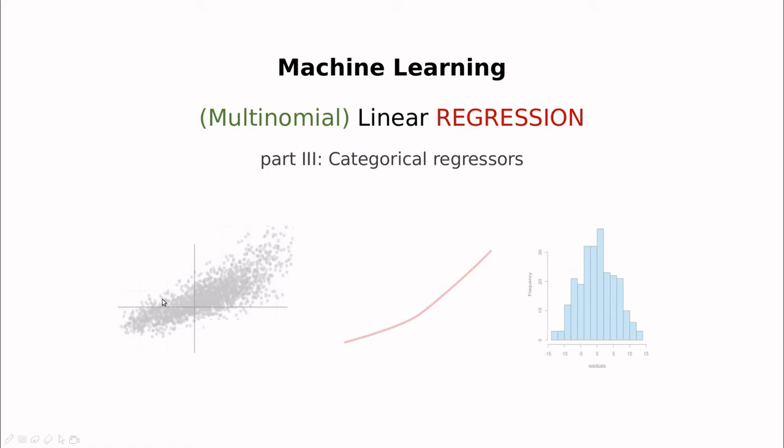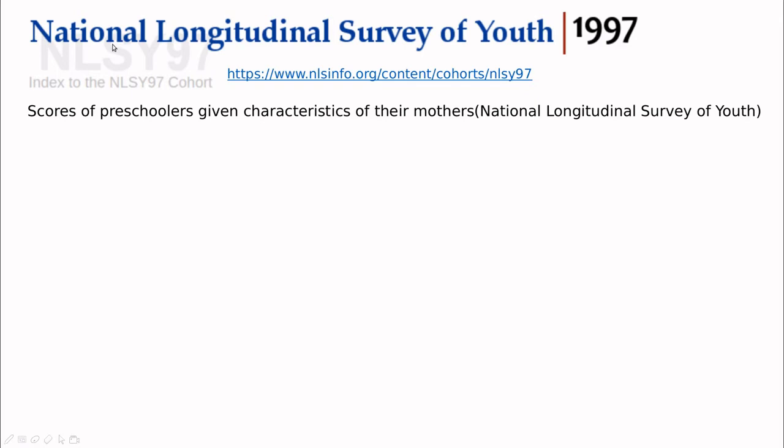So far we've discussed what happens with continuous regressors like VMI versus body fat. But what if we have categorical regressors? Let me show you an example.